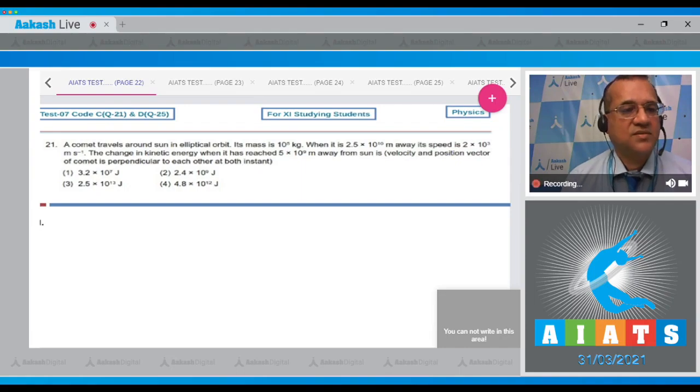Question number 21 is: a comet travels around the Sun in an elliptical orbit. Its mass is 10 to the power of 5 kg. When it is 2.5 times 10 to the power of 10 meters away, its speed is 2 into 10 to the power of 3 meters per second. The change in kinetic energy when it has reached 5 into 10 to the power of 9 meters away from the Sun is, the velocity and the position vector of comet is perpendicular to each other at both the instants.